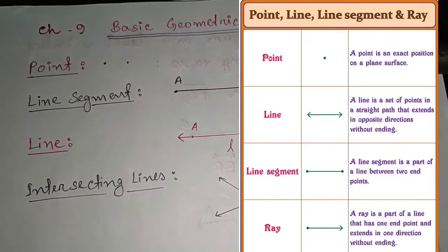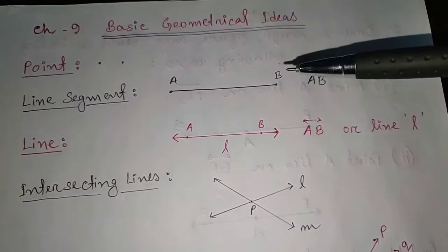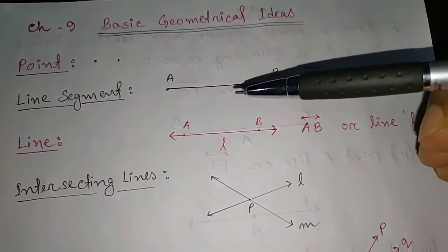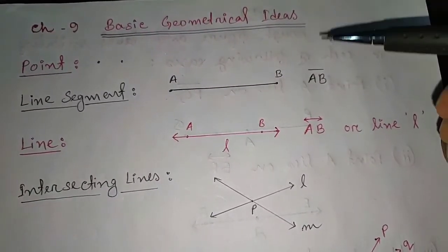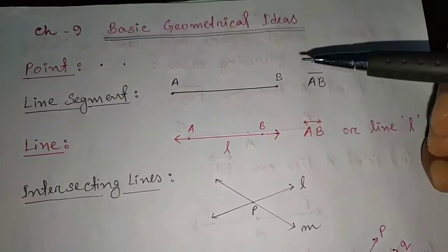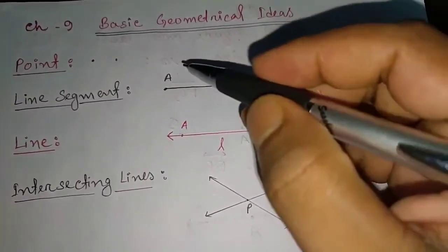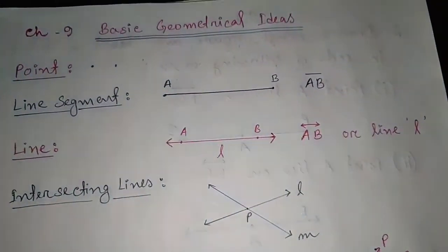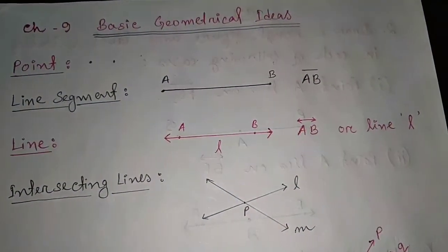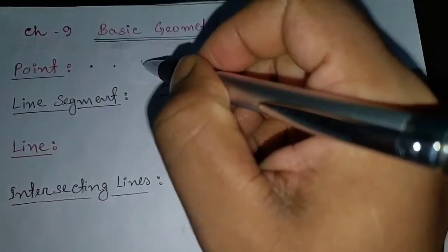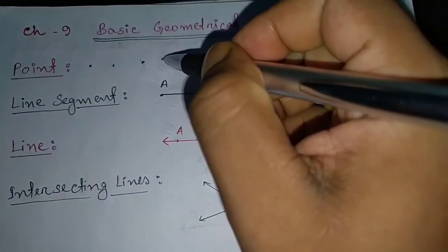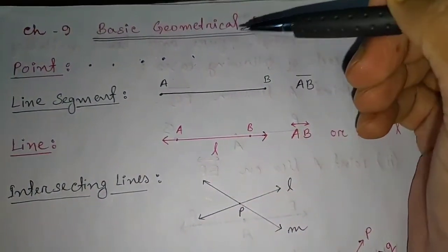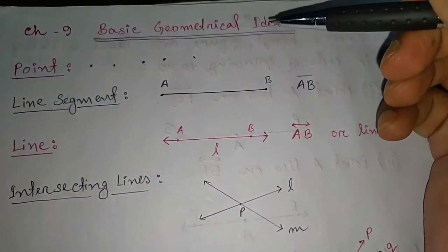The first one is point. A point in geometry is not really anything but some location or position in space, and it has no dimensions — no length, no depth. A point means just a dot. If you put a simple dot, this is a point. It has no dimension: no width, no length, no depth.